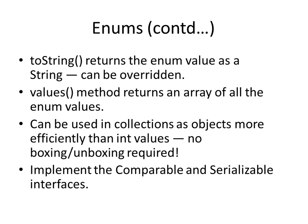That conversion is called boxing. Unboxing is when the Integer wrapper type is converted to the primitive int. So enums can be used more efficiently in collections as objects instead of using primitive ints. And they also implement the Comparable and Serializable interfaces.